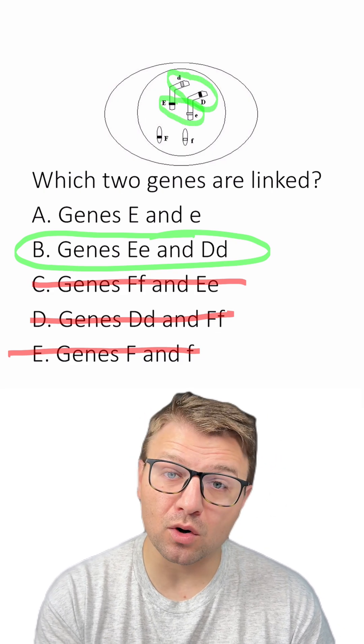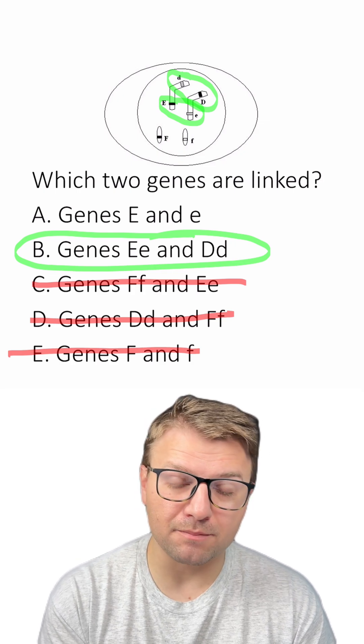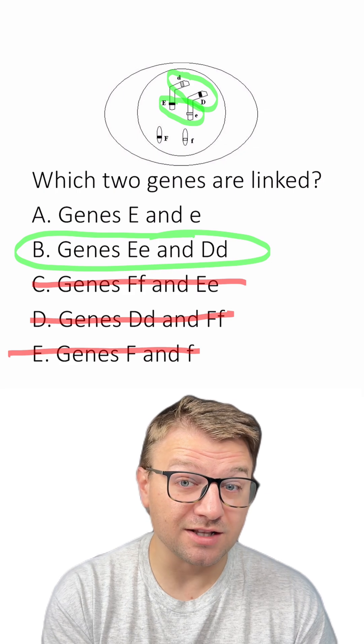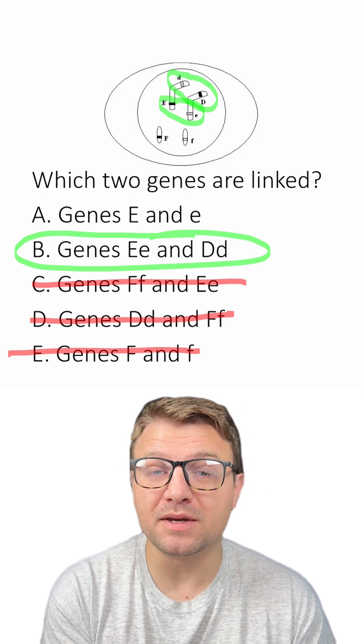This just means they're going to be inherited more often together than apart because they're located on the same chromosome. If they were located on different chromosomes, then they would be unlinked.